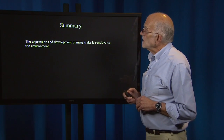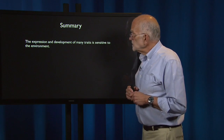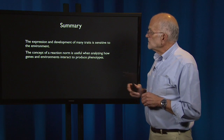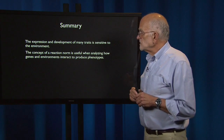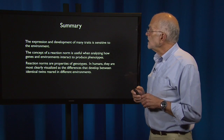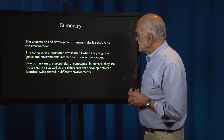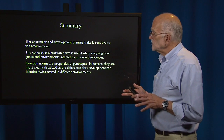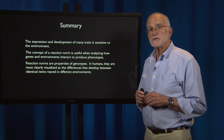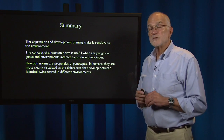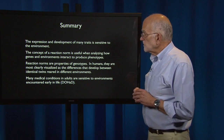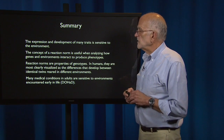In summary, the expression and development of many traits are sensitive to the environment. The concept of a reaction norm is useful when analyzing how genes and environments interact to produce phenotypes. Reaction norms are properties of genotypes, and in humans they are most clearly visualized as the differences that develop between identical twins reared in different environments or undergoing different exercise regimes. Many medical conditions in adults are sensitive to environments encountered early in life — that's the DOHAD paradigm.